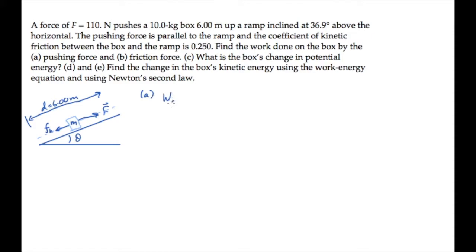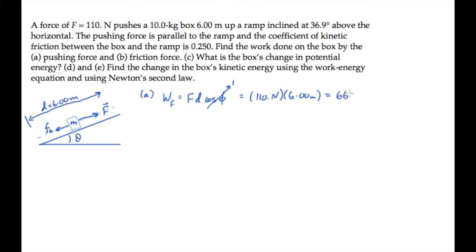Part A asks us for the work done by the pushing force as the block moves along the ramp. The pushing force is constant, so the work is the magnitude of the force times the displacement times cosine of the angle between those two vectors. The force and the displacement are both up the ramp, so the angle is 0, and cosine of 0 is 1. Substituting numbers, the work done by the pushing force is 660 joules.